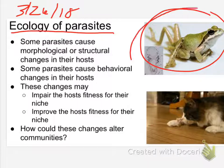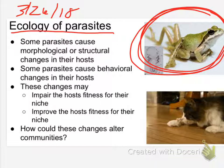Do you think this frog affected by this parasite — I think it's a trematode, a flatworm — would have an easy time getting away from its predators? No, it's got a real serious disadvantage. Now, if enough individuals of this species are affected by a parasite like this and have these morphological changes, that might affect the number of this species we see. In the extreme case, we could lose the species from this community. And when one species is lost, we don't know what the cascade of effects is.